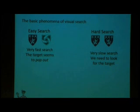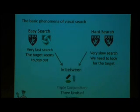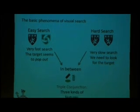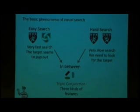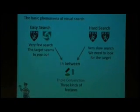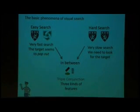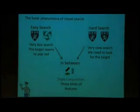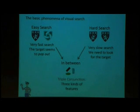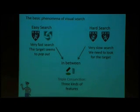But we're interested in the searches in between, which is the triple conjunction search. Triple conjunction comes from having three features that distinguish the target among the distractors. Let's see an example.